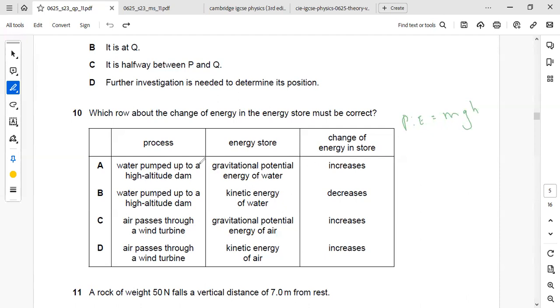When the water is pumped up to a high altitude dam, gravitational potential energy of the water increases. A is the right answer.